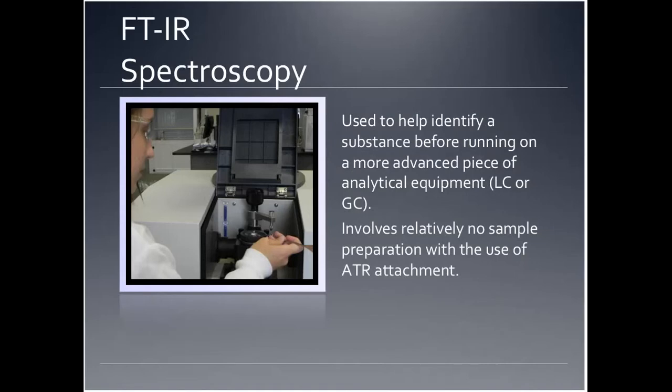Fourier transform infrared spectroscopy, or FTIR, is a powerful tool used for identifying types of chemical bonds in a molecule by producing a spectrum — sometimes called a molecular fingerprint — for a compound. It can be utilized to quantitate some components of an unknown mixture before running an unknown sample on a more specific, advanced piece of equipment like LC or GC. FTIR can be applied to the analysis of solids, liquids, and gases due to specialized attachments that make sample preparation very easy. In the picture, a solid sample is being placed directly onto the instrument for analysis without any manipulation. We have one FTIR in our lab.